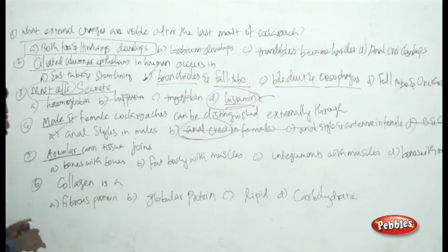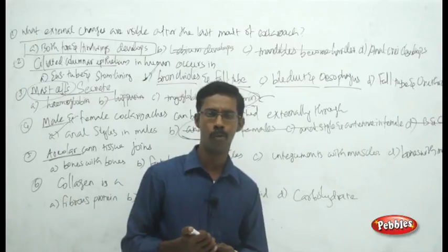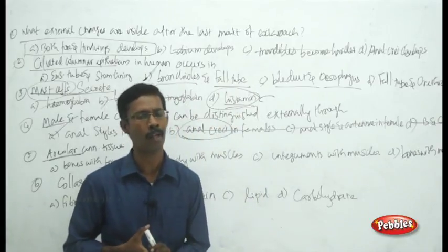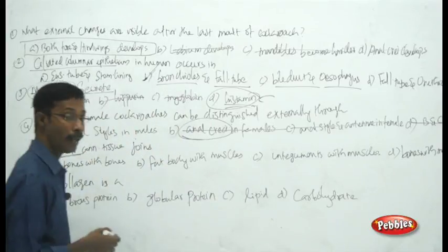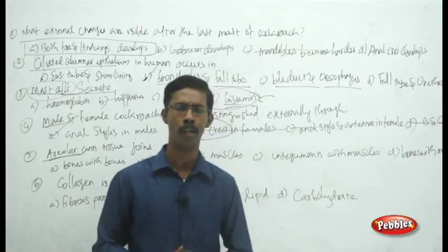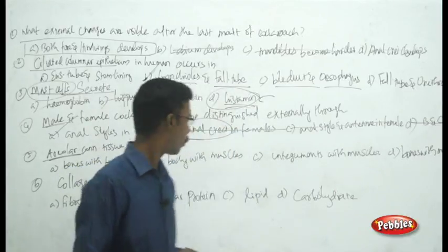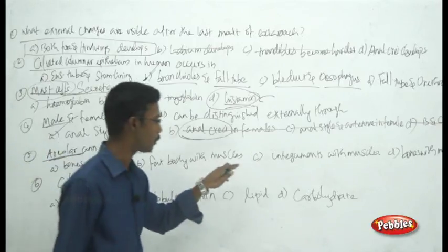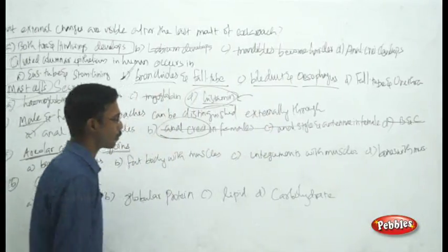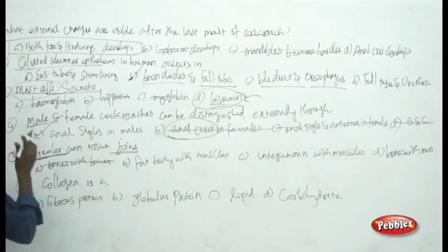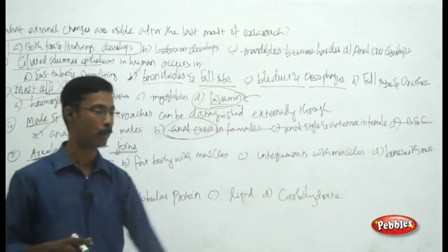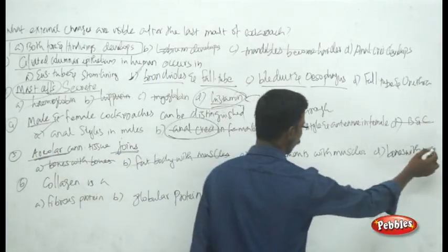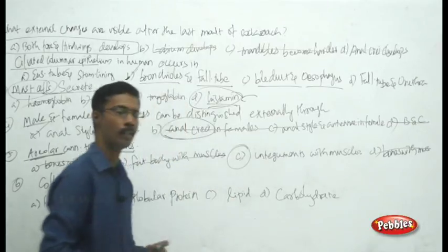Next question: what does areolar connective tissue join? Areolar connective tissue and adipose connective tissue are loose connective tissues present just beneath the skin. Choices are bones with bones, fat body with muscles, integument with muscles, and bones with muscles. Eliminate bones with bones — areolar tissue is not fused to bones. Fat body with muscle is done by adipose tissue. The answer is integument with muscles.